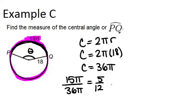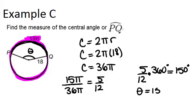So the last step would be to take 5 twelfths and multiply by 360 degrees in order to figure out how many degrees θ is. 5 twelfths times 360 is 150 degrees, which means that θ must equal 150 degrees.